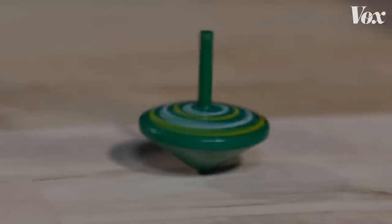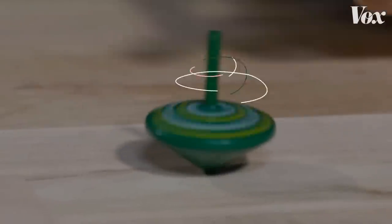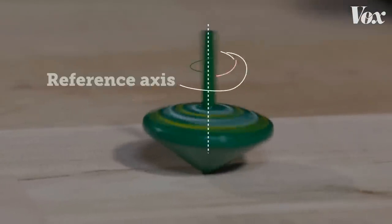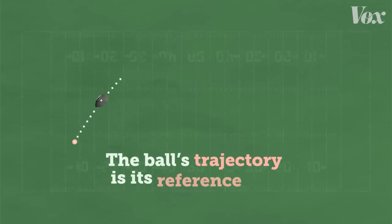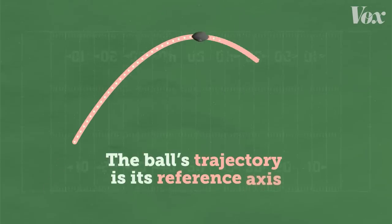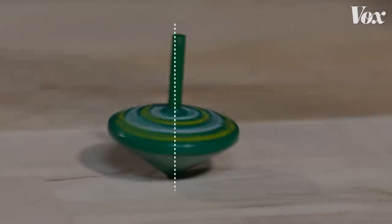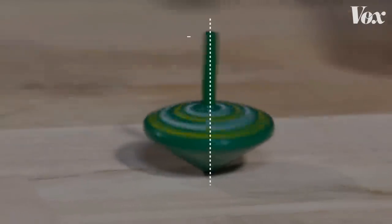And just like the spinning top pointing against the downward force of gravity to stay vertical, the spinning football wants to push against the main force acting against it — the air molecules. Like the top on the table, the ball is going to want to wobble around its center line, its reference axis. And in this case, that ends up being the ball's trajectory, its path through the air. What the football wants to do is exactly what the top wants to do on the table — its axis wants to circle around that force direction.